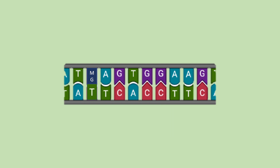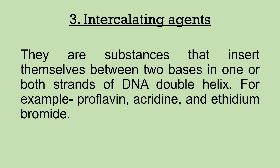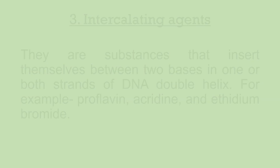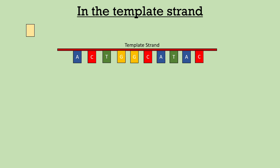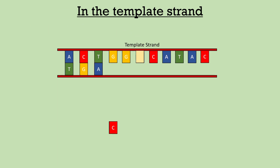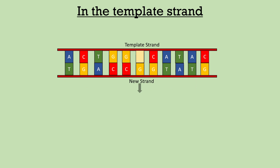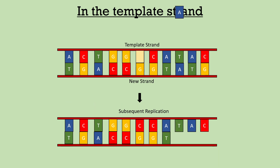Intercalating agents are substances that insert themselves between two bases in one or both strands of the DNA double helix — for example, proflavin, acridine, and ethidium bromide. When an intercalating agent gets inserted between the base pairs of the template strand, an extra random base is inserted in the new strand. After one cycle of replication, during which the intercalating agent is lost, a base pair is added, thus creating a frameshift mutation.